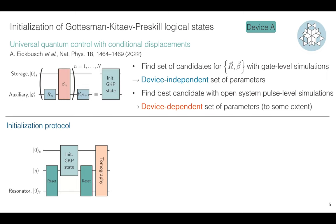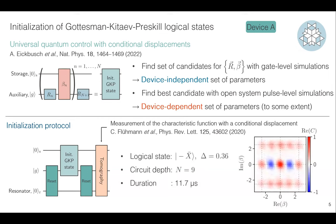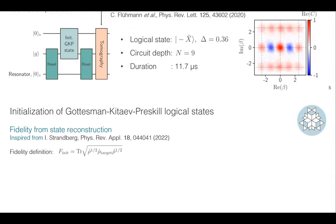Instead of Wigner tomography, in our case with small chi it is more natural to measure the characteristic function. This can be done very easily with a conditional displacement, as demonstrated in experiments with trapped ions. For the logical state minus X at delta 0.36, the circuit depth is about nine for a total duration of about 12 microseconds. The resulting state looks relatively good qualitatively, and we can examine the fidelity more quantitatively.